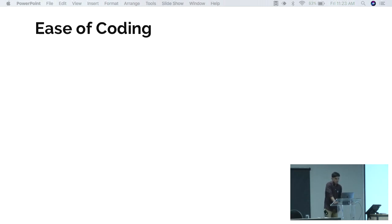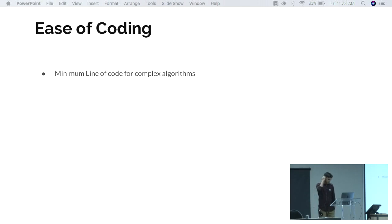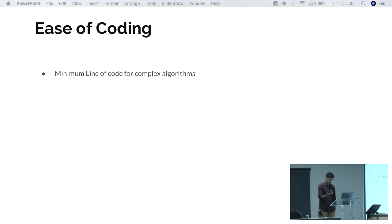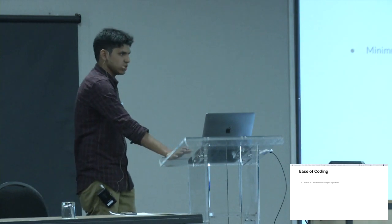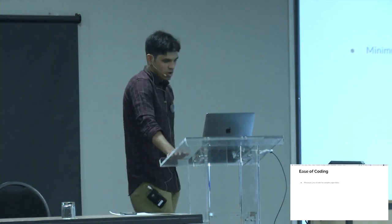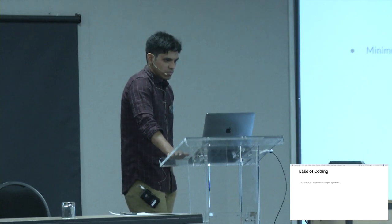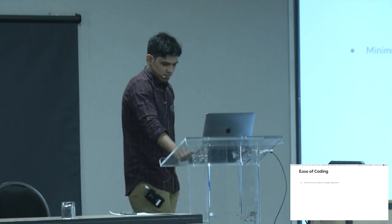Let me explain ease of coding and how we evaluate it. The first sub-parameter is minimum lines of code for a complex algorithm. Deep learning is very complex and hard to understand. Everybody wants to implement complex algorithms with minimum lines of code, and many frameworks provide out-of-the-box functions so you can accomplish things with just one function call — maximum output from minimum code.